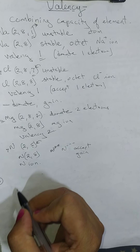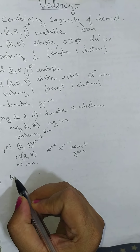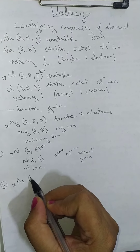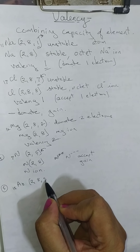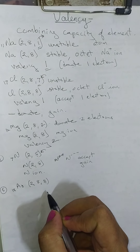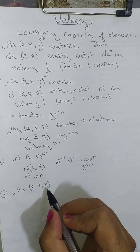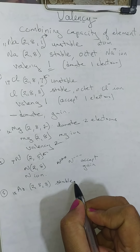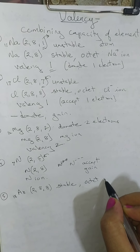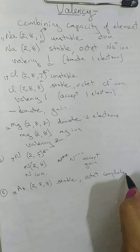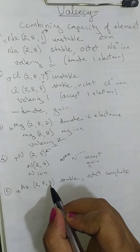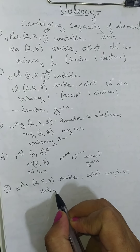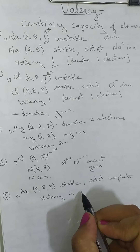Let us take the last example of argon. Its atomic number is 18, so its electronic configuration is 2, 8, 8. Its outermost orbit is already stable and its octet is complete. Therefore it does not donate electrons, neither does it gain electrons. Hence, its valency is 0.